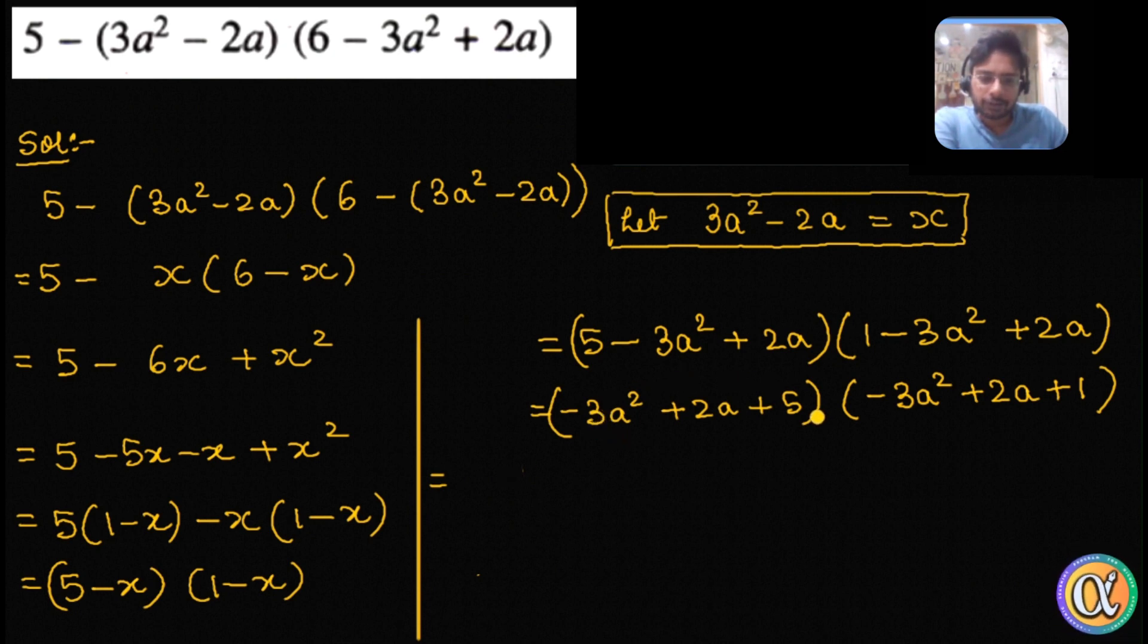Product of the corner is minus 15, minus 3 into 5 is minus 15. So think of two numbers whose difference is 2 and the product is minus 15. So I think again 5 and 3. So this becomes 5a minus 3a plus 5.